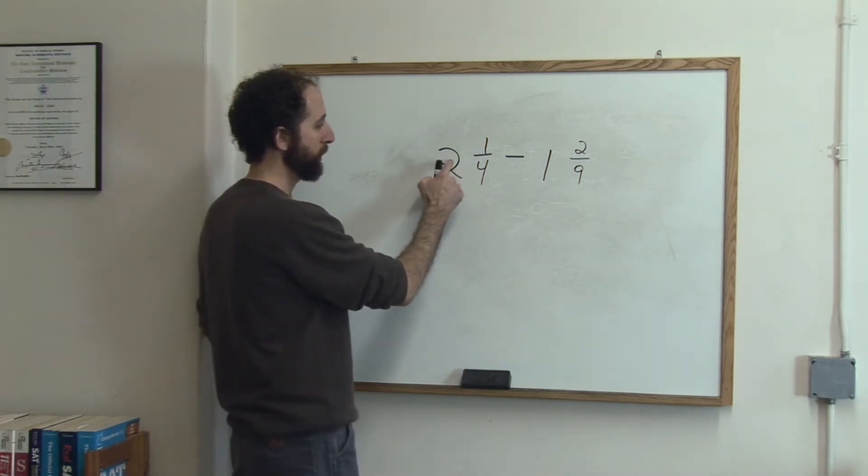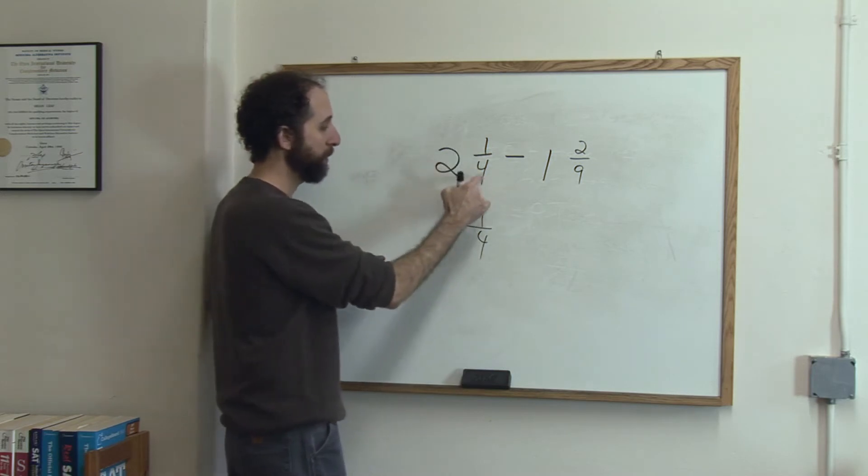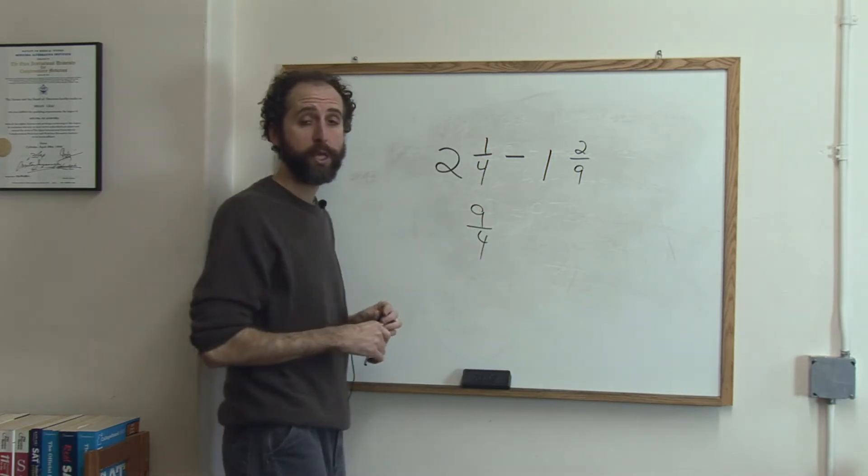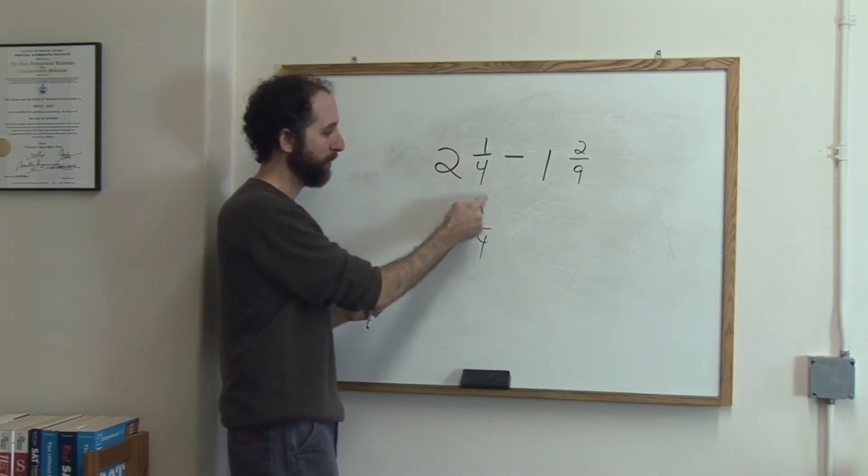So we go like this: 4 times 2 is 8, plus 1 is 9 fourths. So this mixed number as an improper fraction is 9 fourths. Again, the trick was this times that plus this is the top and the bottom stays.